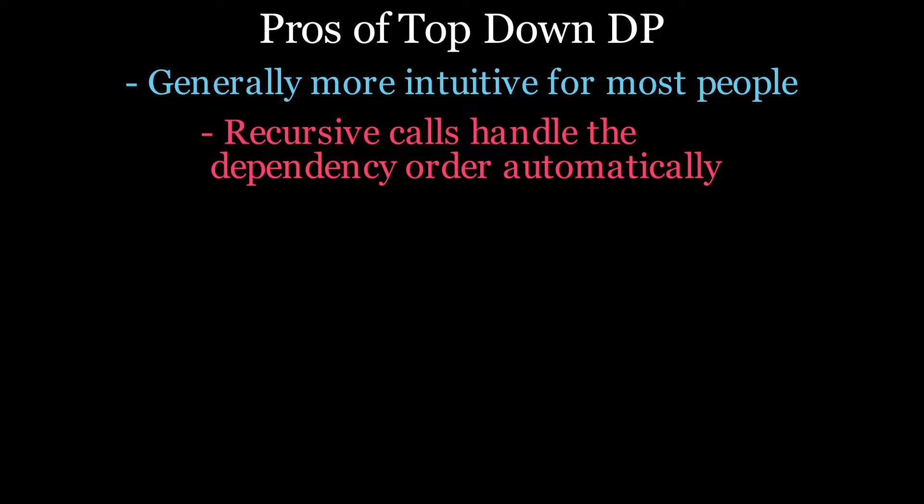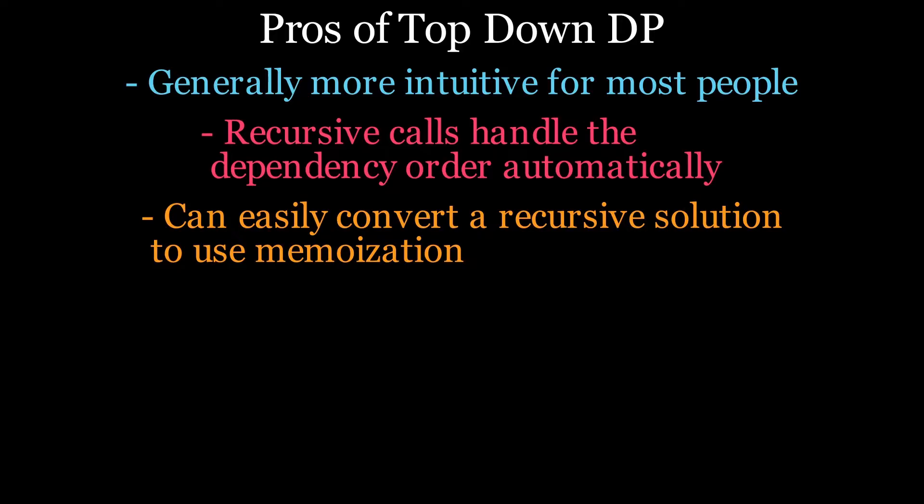If you already have a recursive solution, then memoization can be trivially added. As we saw earlier, it's just a single line decorator in Python. Converting to bottom-up dynamic programming, on the other hand, is not just an optimization. It's going to require rethinking the problem and probably a rewrite of the code.